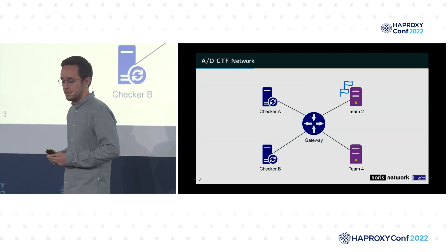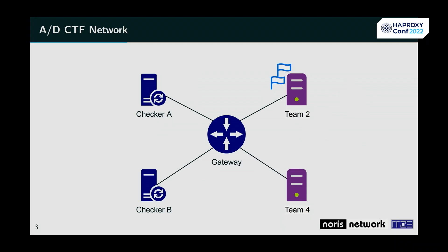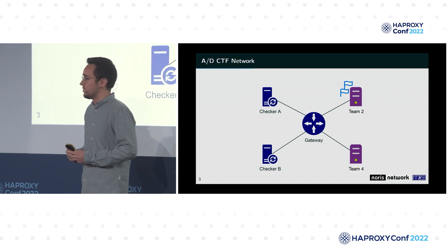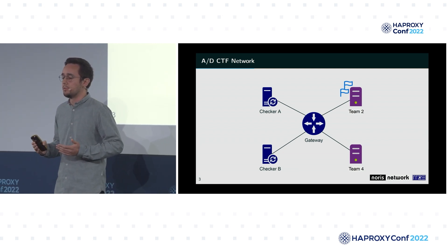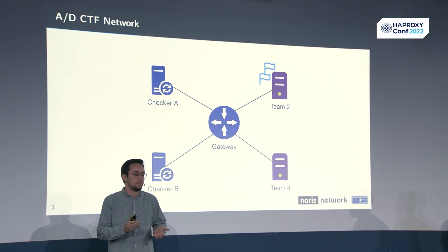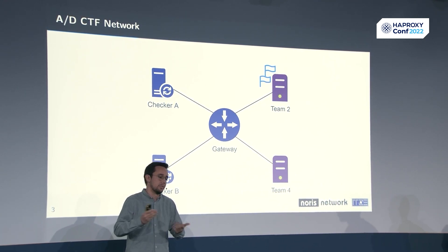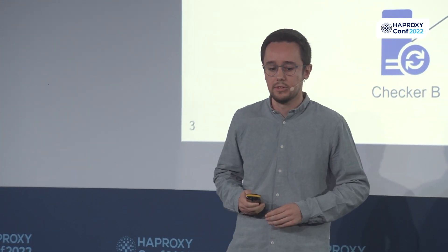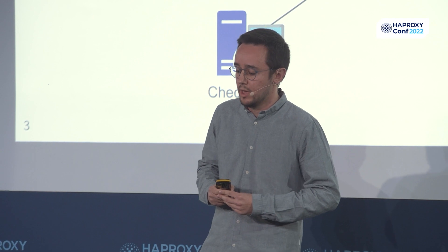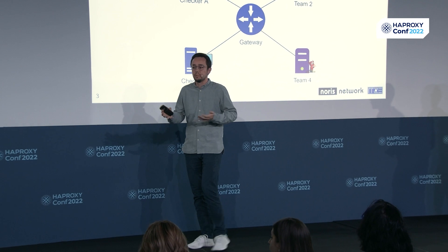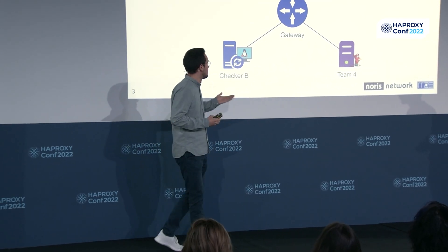What does this network look like? You can see on one side checkers and on the other side teams. Checkers and the gateway are hosted by us as the organizers. The role of the checkers is to distribute new flags to the teams so they can be stolen, and to check availability of services. A team could just turn off their machine to avoid being attacked, so checkers verify everything is working. This leads to the main topic: teams should not be able to distinguish between different types of traffic — between different teams attacking them, or between checkers and teams — otherwise they could block all team traffic while appearing available to checkers.